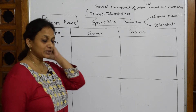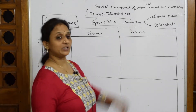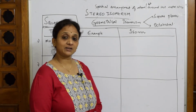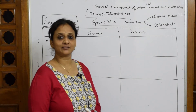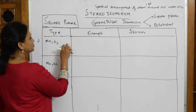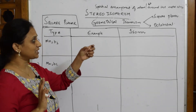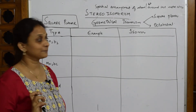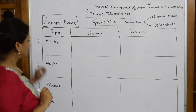The geometrical isomerism we are going to study for grade 12 covers square planar complexes as well as octahedral complexes. Square planar means the metal atom is in the center with four ligands arranged on all four corners of a square. When we say octahedral, all six corners are occupied by ligands.